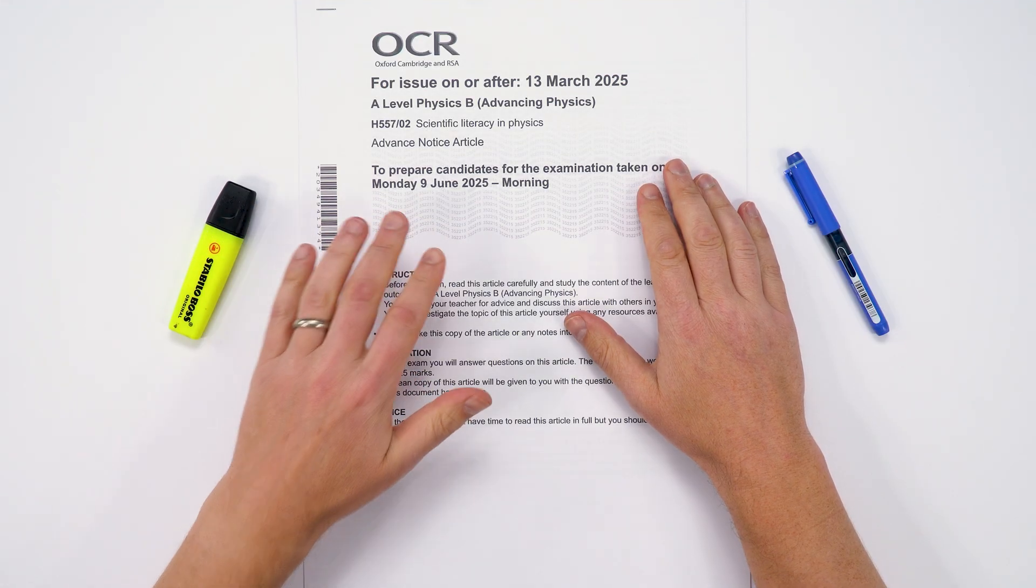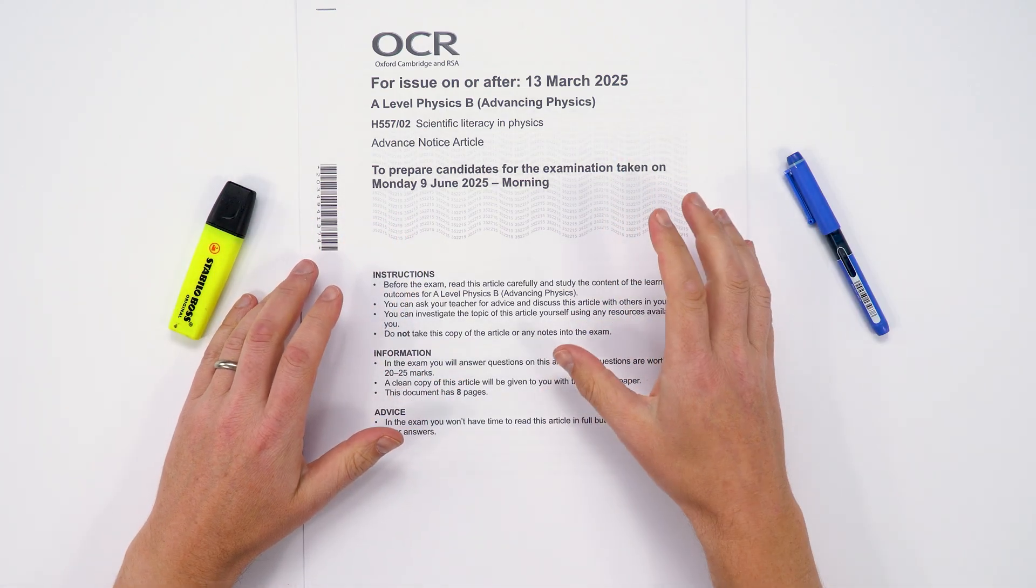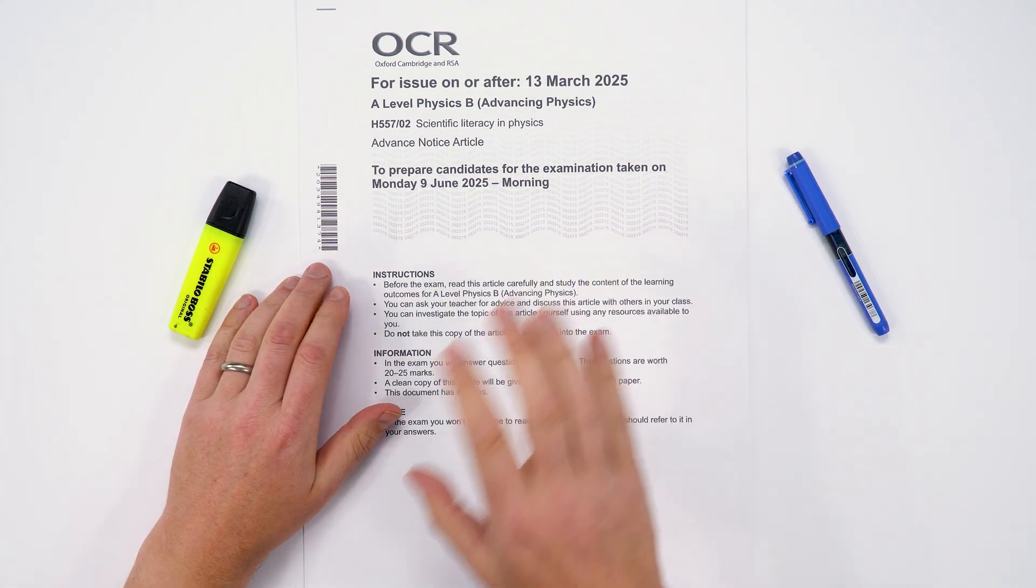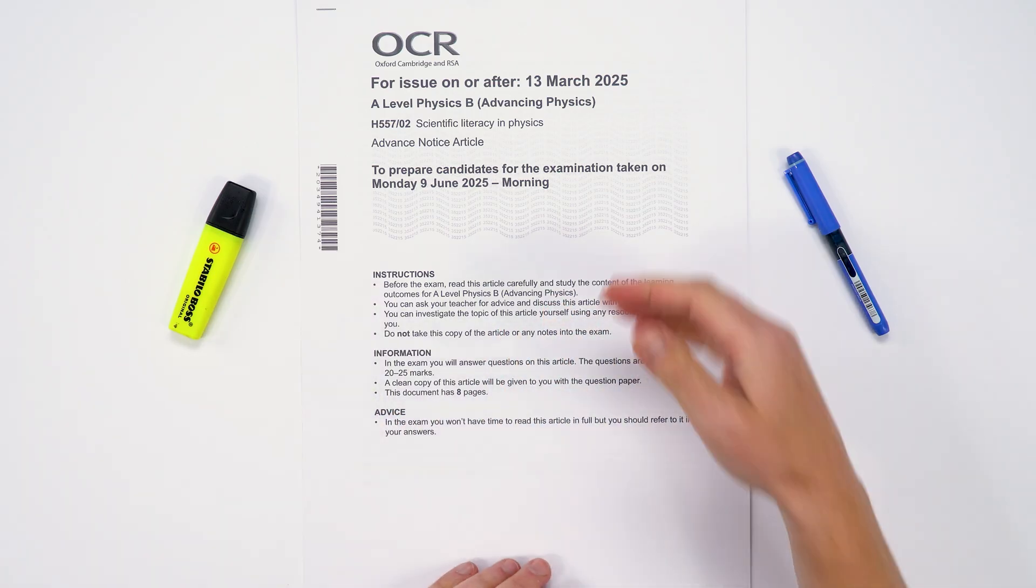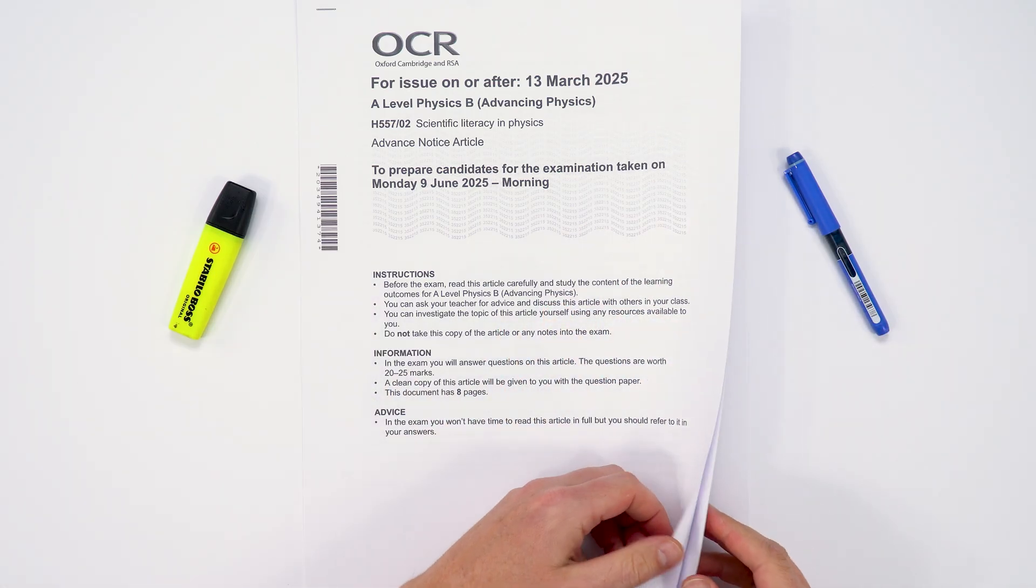This is the pre-release material for OCR B 2025. If you're a student, I'm sure you've already downloaded your own copy and had a good read through. I'm not going to read through the whole thing, but I thought I'd go through some of the things I picked up and maybe how this could be assessed, possibly with some questions in your real exam.